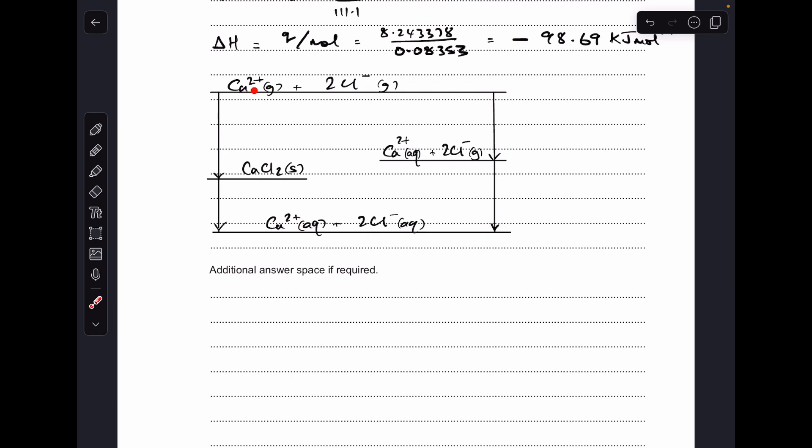And then down the other side we've got the two hydration enthalpies. Just keep an eye on your state symbols, so you can see I've gone from calcium 2 plus gaseous to calcium 2 plus aqueous. That's the enthalpy change of hydration for the calcium 2 plus ions. And then this arrow here, you've got two chloride ions gaseous going to two chloride ions aqueous, so that's going to be two times the enthalpy change of hydration for the chloride ions.